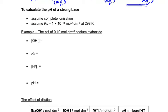We'll be using Kw in these calculations. This will be given in the question if you need it. At 298 Kelvin, it's always going to be 1×10⁻¹⁴.